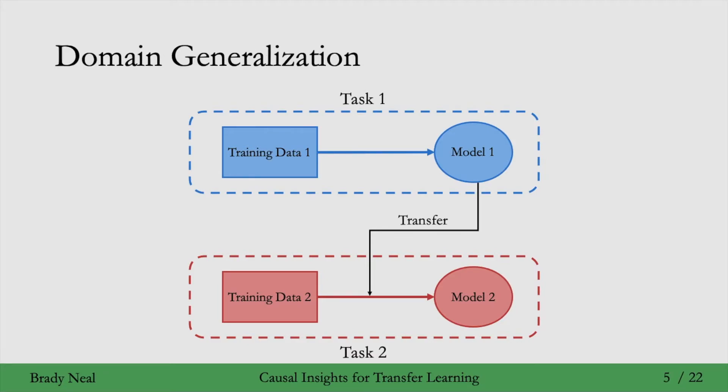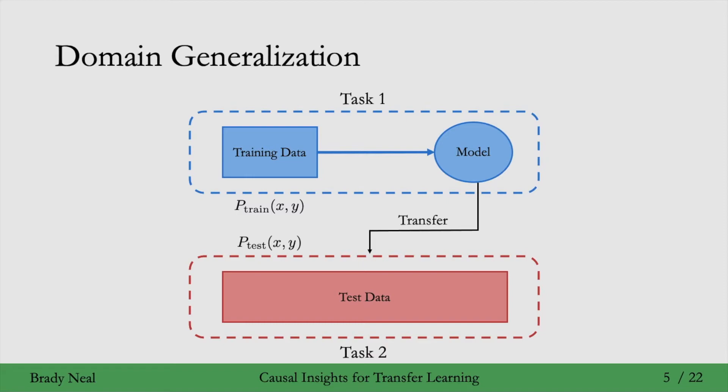Domain generalization is the specific subset of transfer learning that I mentioned, where there's only one model that we learn from the training data in task 1, and then we don't have any data in task 2. Rather, for task 2, we just test on the task 2 data. So we're learning a model from task 1 data that comes from this P_train distribution, and then we're testing on data from task 2, which we'll call our P_test distribution. And in general, these two distributions are not equal. Right, so if these two distributions were equal, this would be just regular supervised learning.